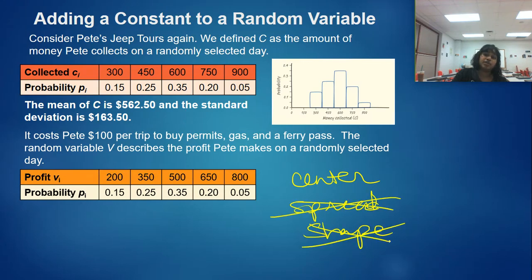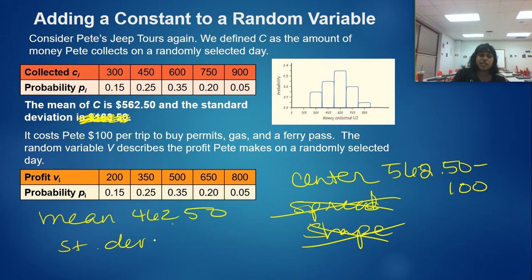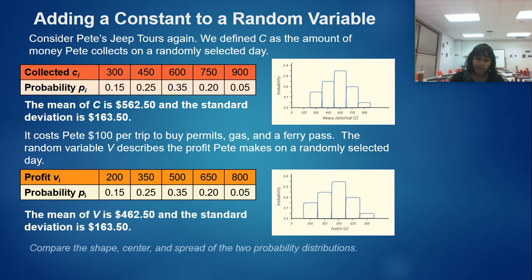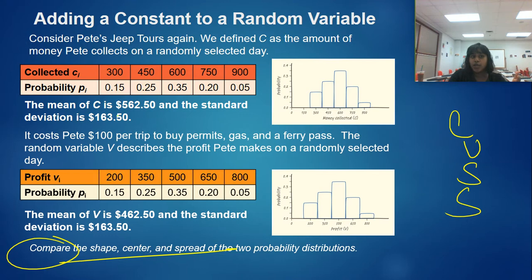Nothing ever affects the shape. So I'm going to assume that my standard deviation stays the same — the only thing changing is the mean, which I subtract by 100, giving a new mean of 462.50. The standard deviation remains 163.50. Let's check using the actual math — and there it is, proof. We could CUSS and compare: the mean shifted by subtracting 100, the standard deviation didn't change, no real unusuals, and both distributions are roughly symmetric.